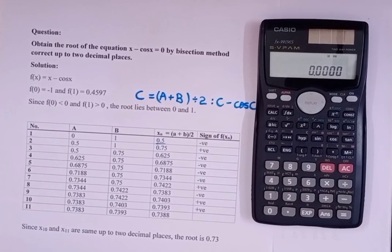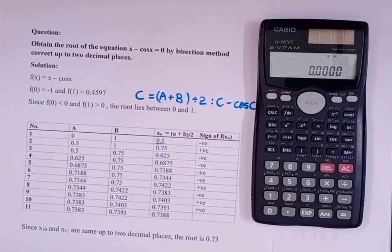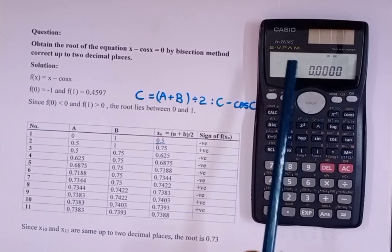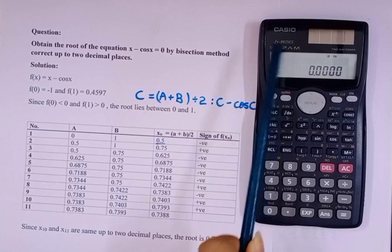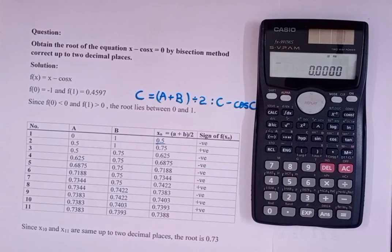One more thing: you can perform this programming on the Casio fx-82MS calculator. For that you will need the Casio fx-991MS — only then will you be able to perform this programming.